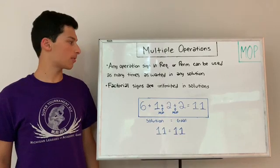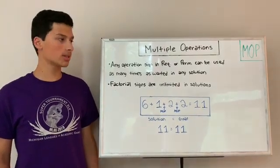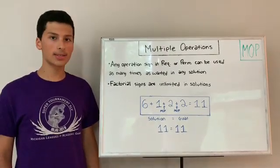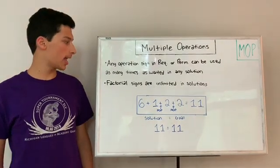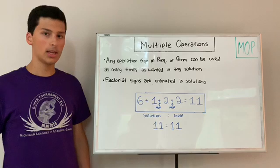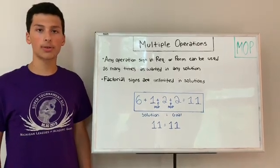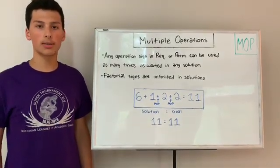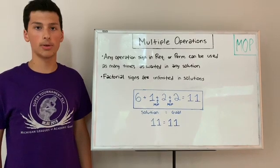The next variation is multiple operations. When you call multiple operations, any operation signed and required and permitted can be used as many times as wanted in any solution. If you call factorial, factorial signs are also unlimited in the solution, but are still limited to 2 in the goal.